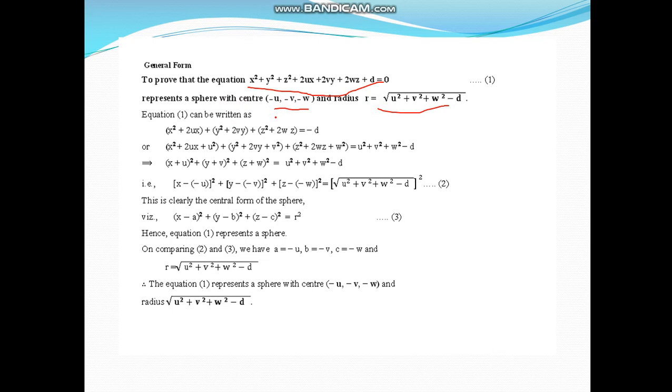So equation (1) can be written as: just open it, transfer to right side, and collect terms. Adding u², v², w² on both sides so that it becomes perfect square. Now let us compare this with equation of sphere.